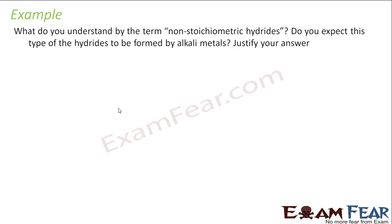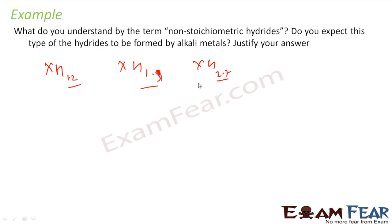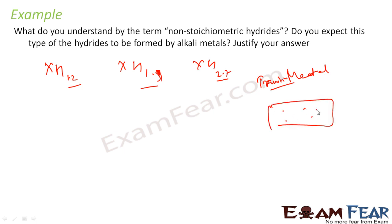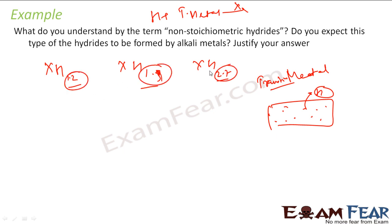What do you understand by the term non-stoichiometric hydrides? Non-stoichiometric means something like XH₁.₂, or XH₁.₉, or XH₂.₇ — a fractional number. These kinds of hydrides occur when metals act as a sponge. Transition metals act as sponges — they have holes, and hydrogen sits inside those holes. Since hydrogen can sit more or less in these holes depending on temperature and pressure, the value is not constant and can be fractional. So they are called non-stoichiometric because the ratio is not in fixed proportion.